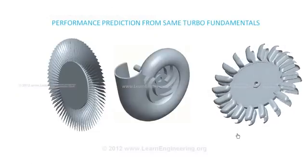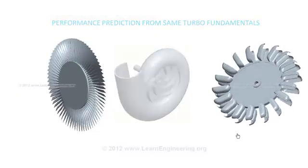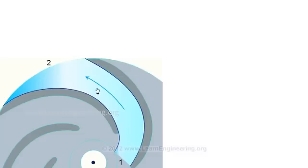To develop turbomachinery fundamentals, consider fluid flow through this channel. The inlet velocity V1 gets changed to outlet velocity V2. Velocity of fluid can be split into tangential and radial components.